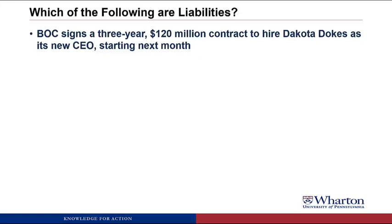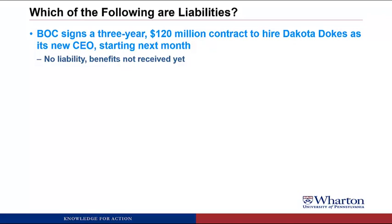BOC signs a three-year, $120 million contract to hire Dakota Doakes as its new CEO starting next month. This is not a liability because there's no obligation based on benefits received currently or in the past — the first criteria. Until Dakota actually works for us without getting paid, there cannot be a liability. A liability would only exist for time actually worked without pay. We also can't book the full three-year contract because Dakota could quit, we could fire Dakota, or lawyers could find a way out — too much uncertainty.